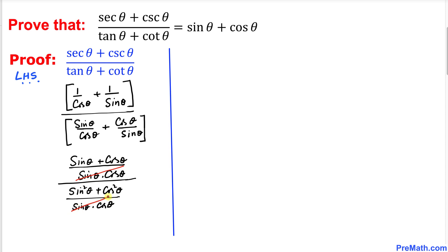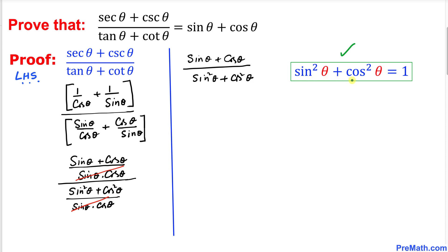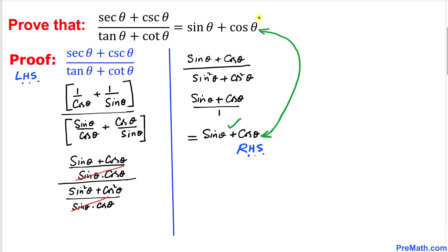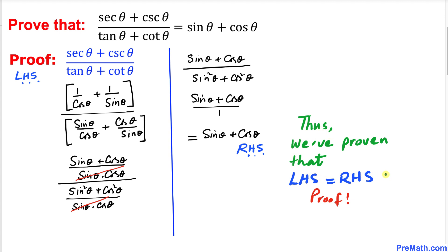Now let's recall the famous trigonometric identity: sine squared theta plus cosine squared theta equals one. Replacing that, we get sine theta plus cosine theta divided by one, which is simply sine theta plus cosine theta. This matches the right hand side, so we have proven that the left hand side equals the right hand side. Thanks for watching, and please don't forget to subscribe for more exciting videos.